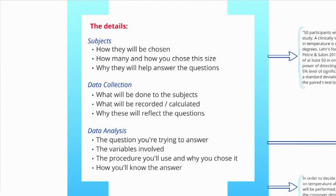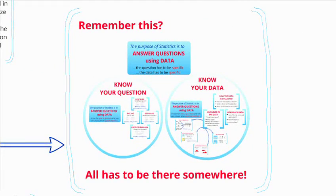There are three main parts of a research proposal where you'll find statistical information: whichever part you talk about how you chose the subjects, whichever part you talk about data collection, and whichever part you talk about data analysis. In some settings, like a grant, those might be lumped into other sections. Just because something isn't under data analysis doesn't mean there's no statistical information there. All the information that goes into choosing what stats goes with what has to be there somewhere, so the reader can tell you made that decision based on actual information.